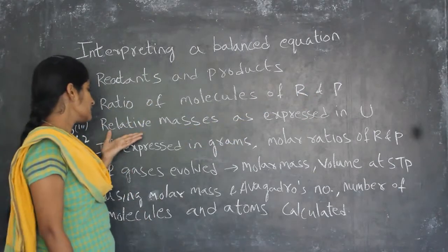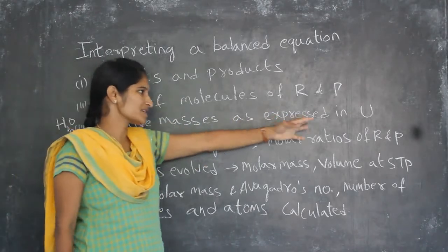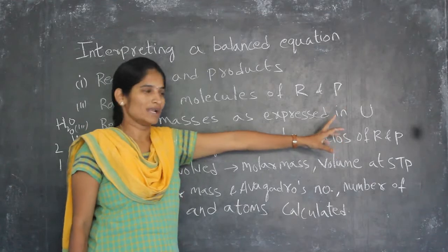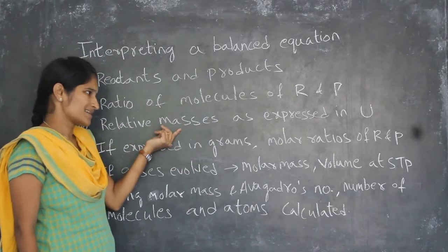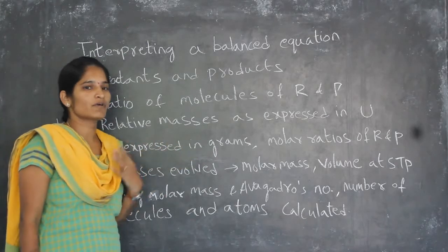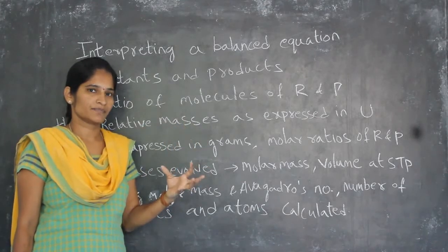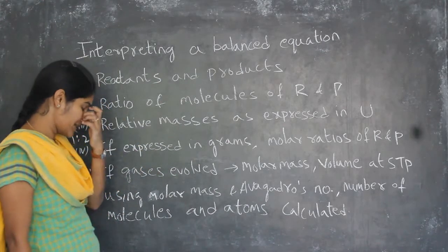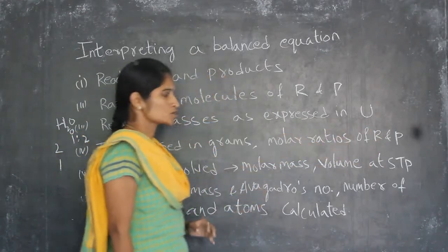We can also find the relative masses, because the masses are expressed in unified mass. Unified mass is the unit used to represent a formula. When we know the unified mass, we can find the relative masses. Next, if we express in grams, then the molar ratios of reactants and products can also be found out.